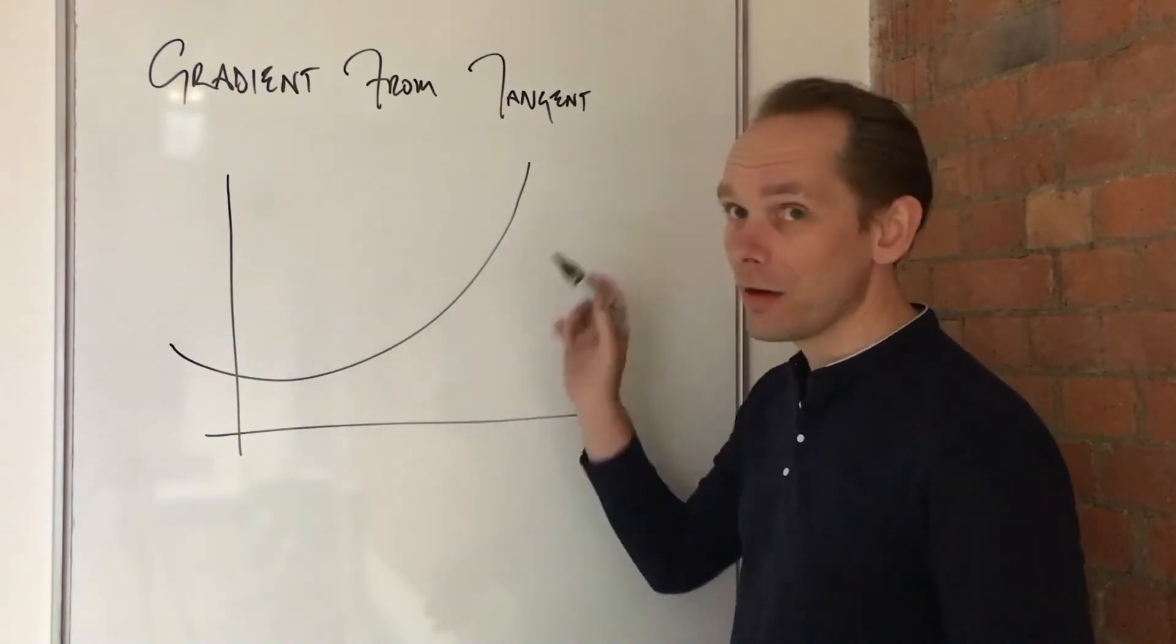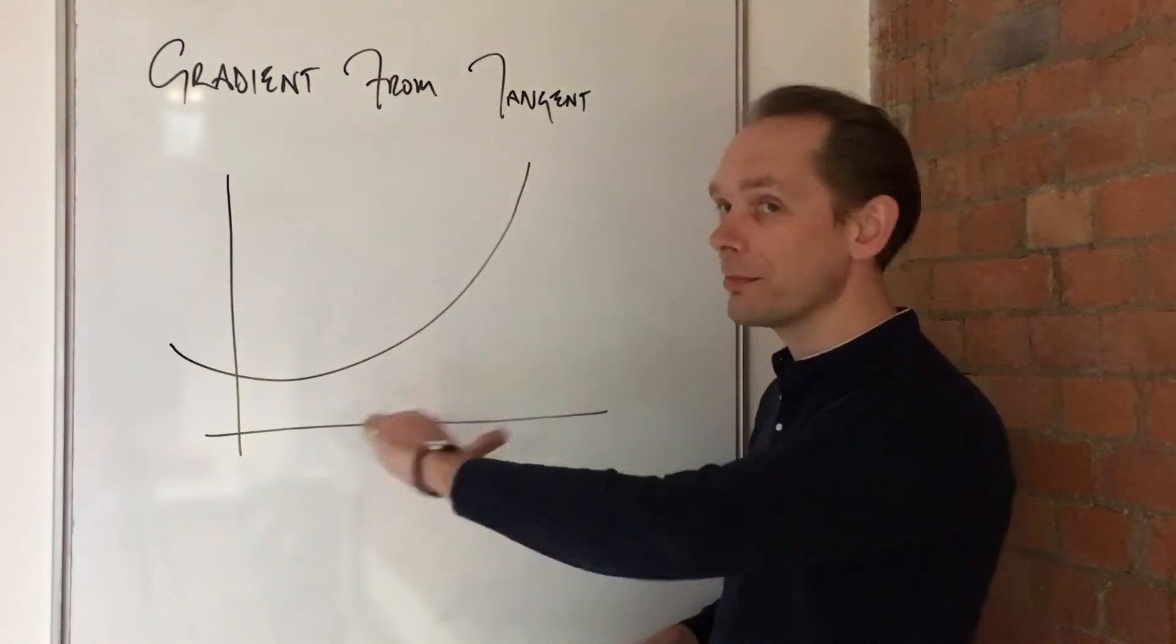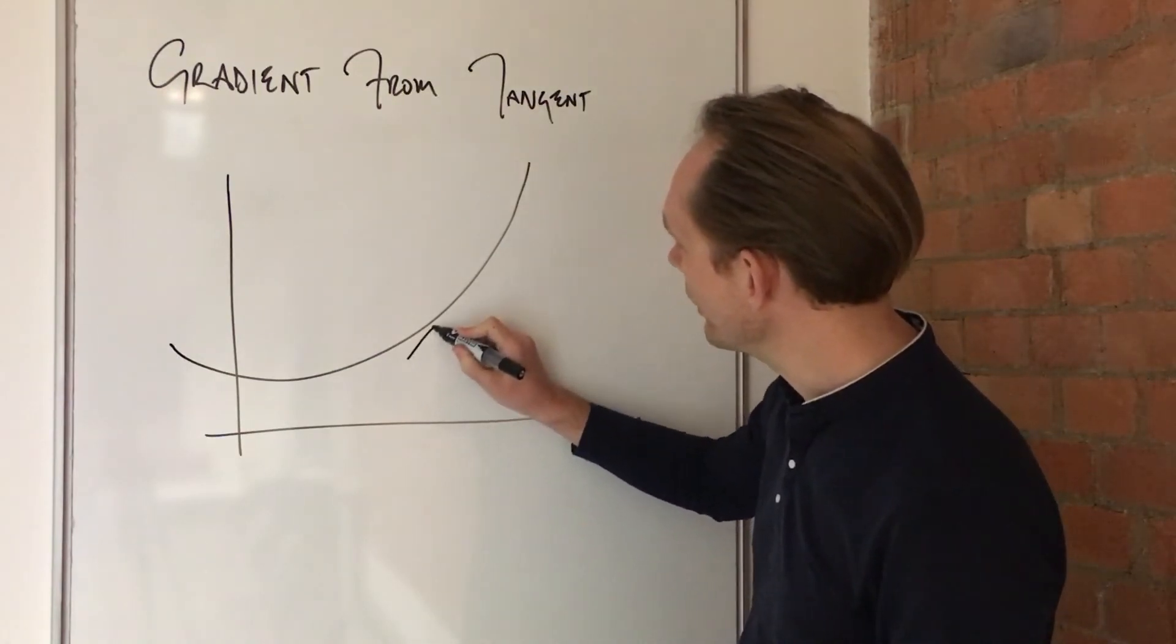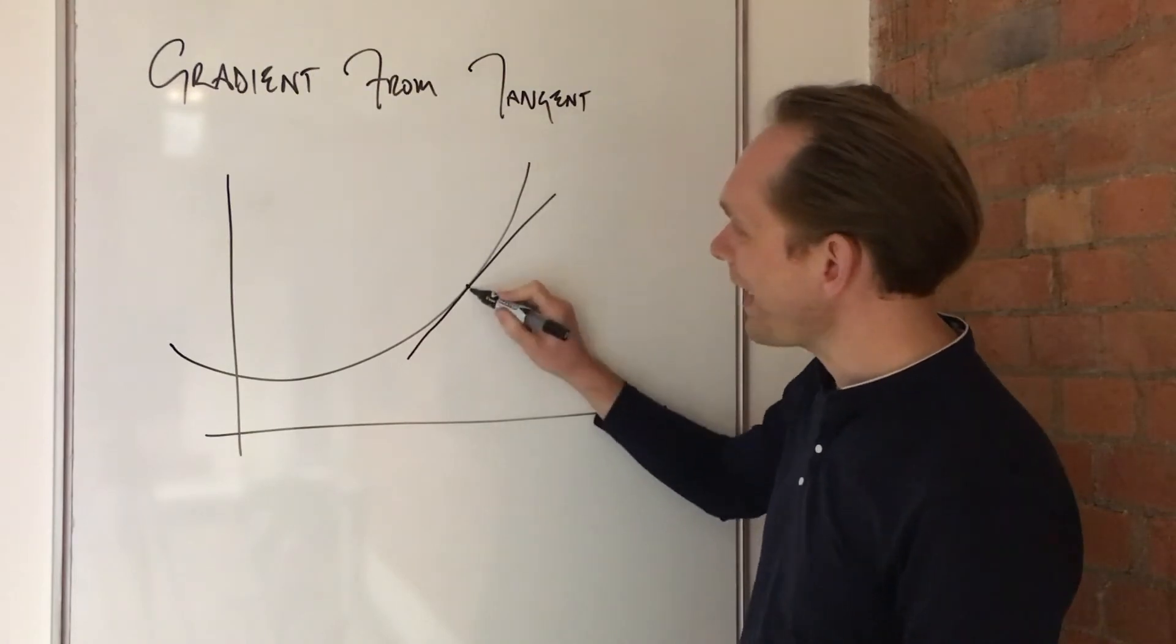Obviously, a curve has a gradient that's changing all the time. By definition, it's getting steeper or shallower. But what you can do is identify any given point and draw a tangent across it. So that's the gradient at that point.